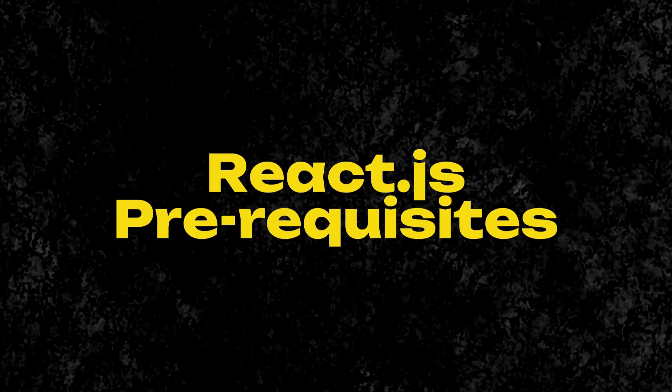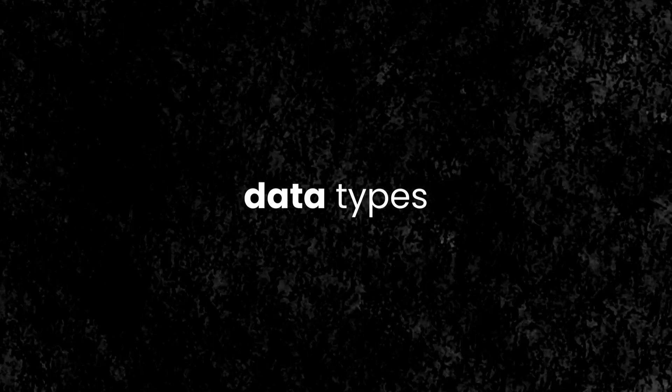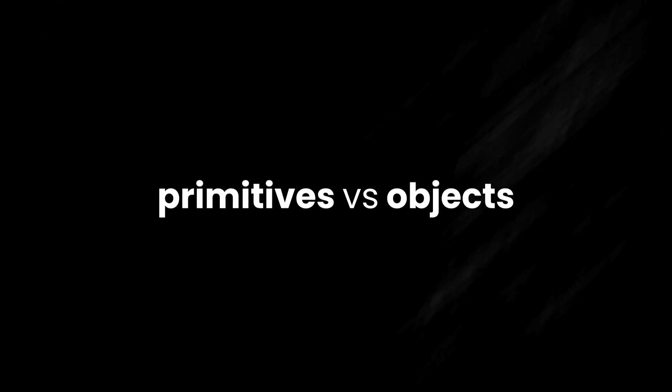Let's jump into the topics themselves. Beginning with JavaScript basics: this includes basic syntax and structure — how to create comments, how to create variables, what are the different data types available in JavaScript, and what operations you can perform on those data types. One major topic here is the difference between primitive data types and objects in JavaScript.